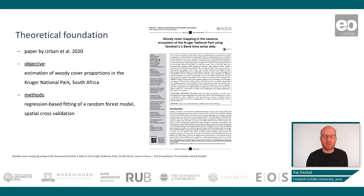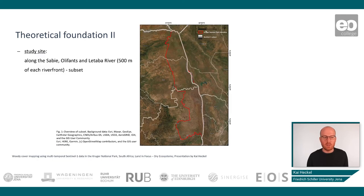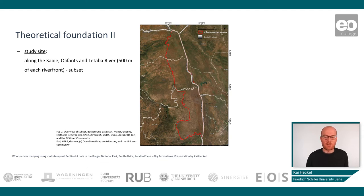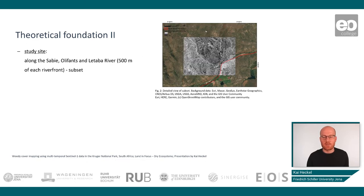Moving on to the next slide, we can now see the study site we are working in. In red you can see the Kruger National Park in South Africa on the border to Zimbabwe and Mozambique — on the most northern east part of South Africa. Our study site is located in the very south of the Kruger National Park. This subset crosses the border of the park, and here is a Sentinel-1 VH backscatter image from 2016 showing the ranges of backscatter we can observe.